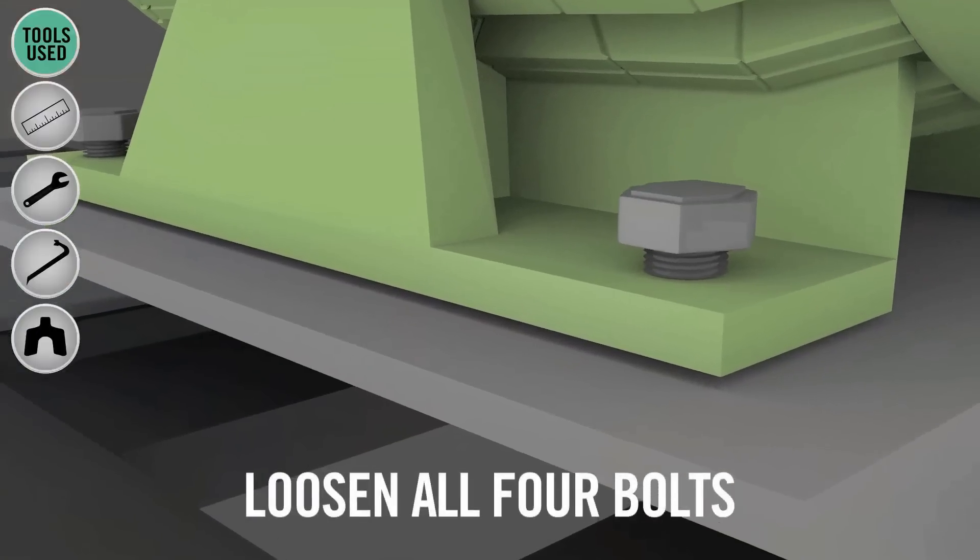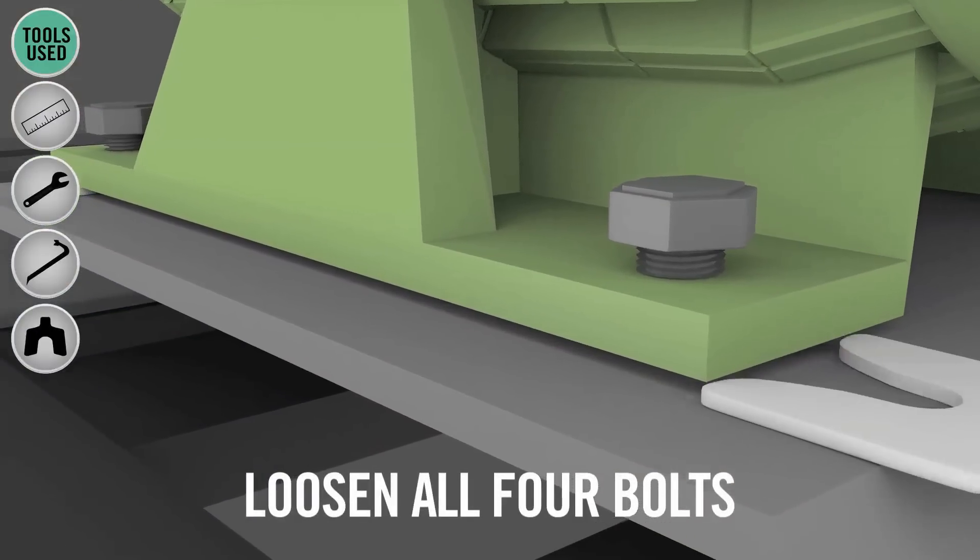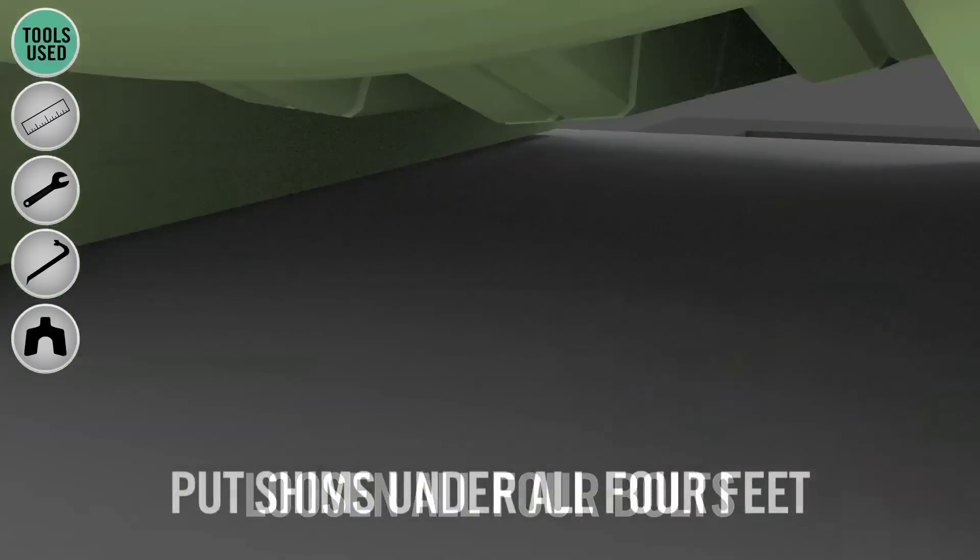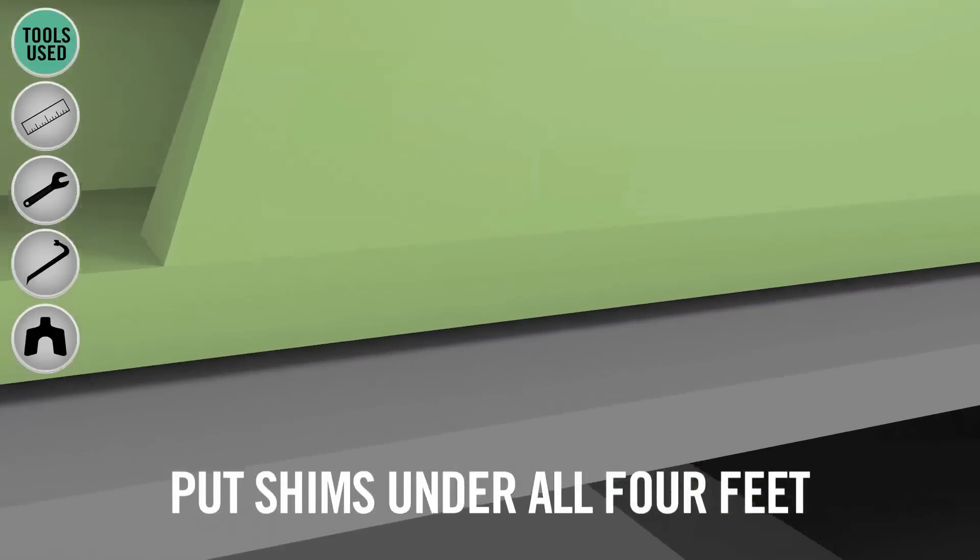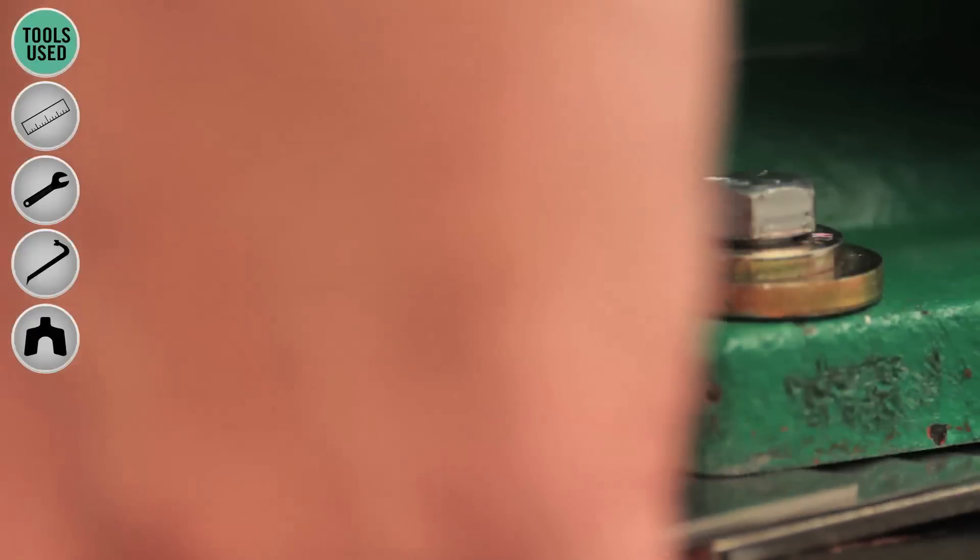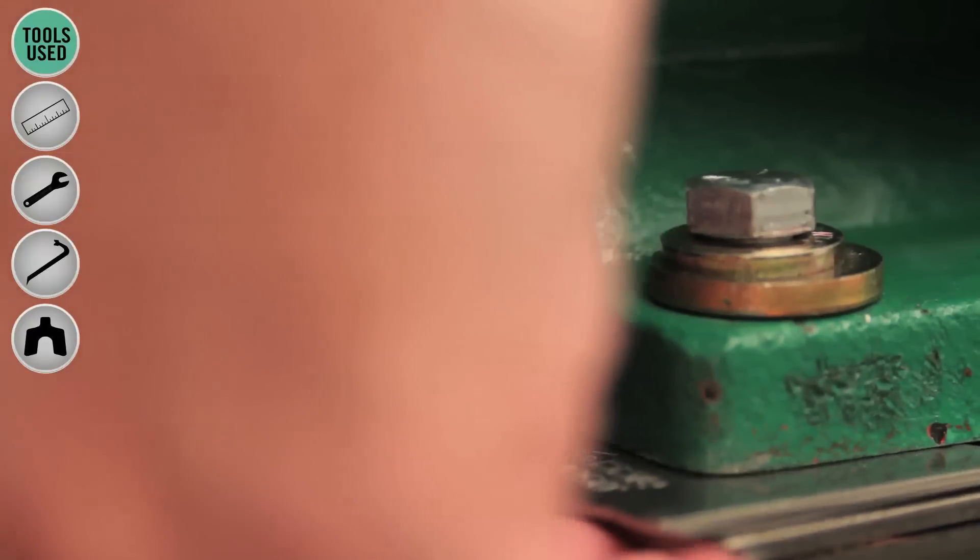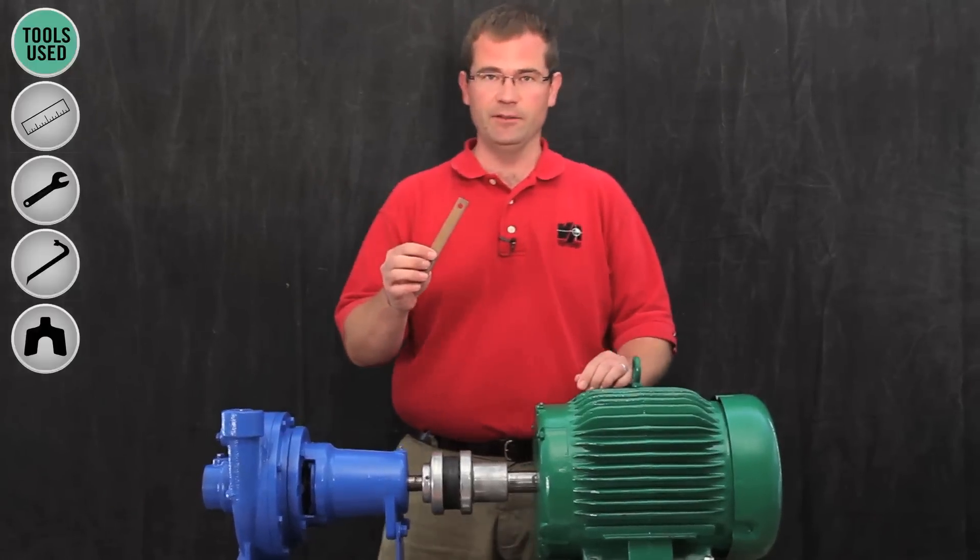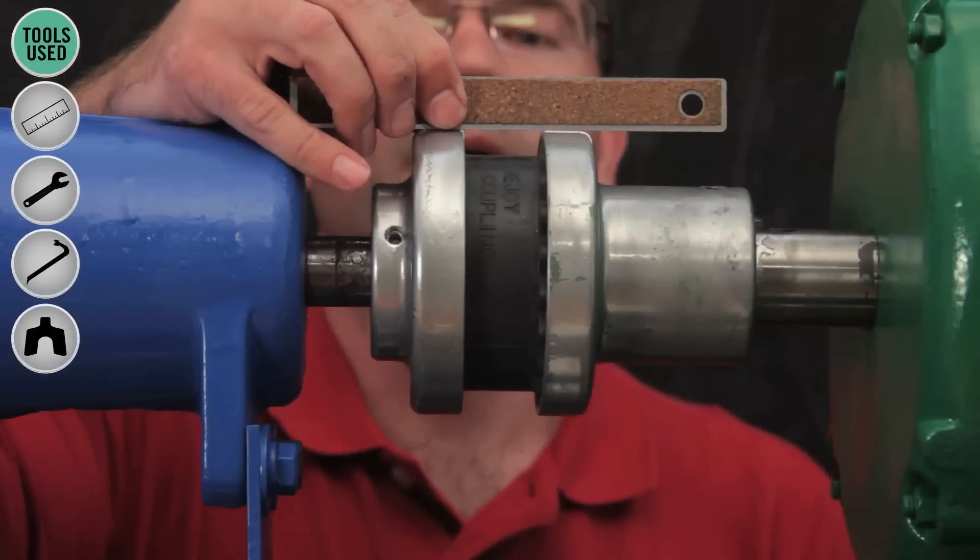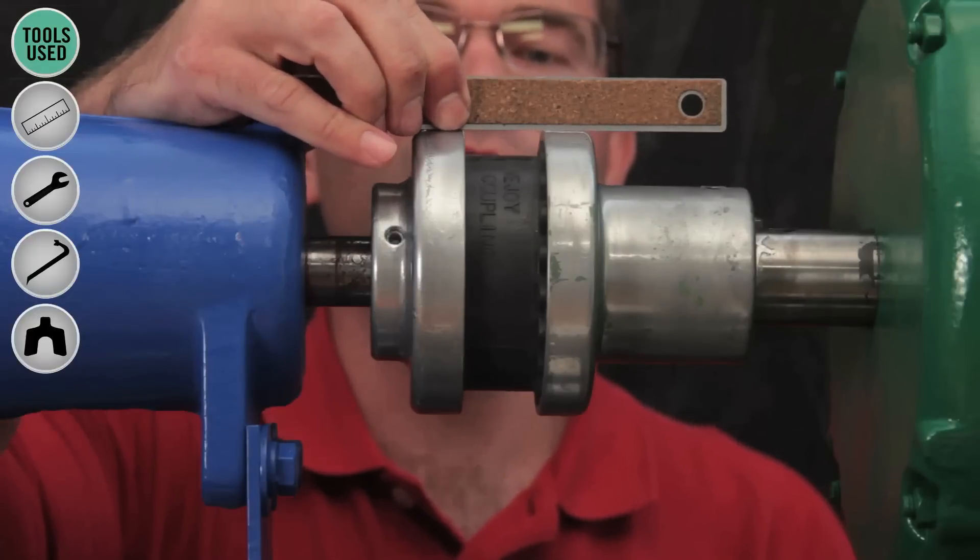So I'm going to loosen all four bolts and put 50 mil shims under all four feet. I'll check again with a straight edge and we can see that it's much closer.